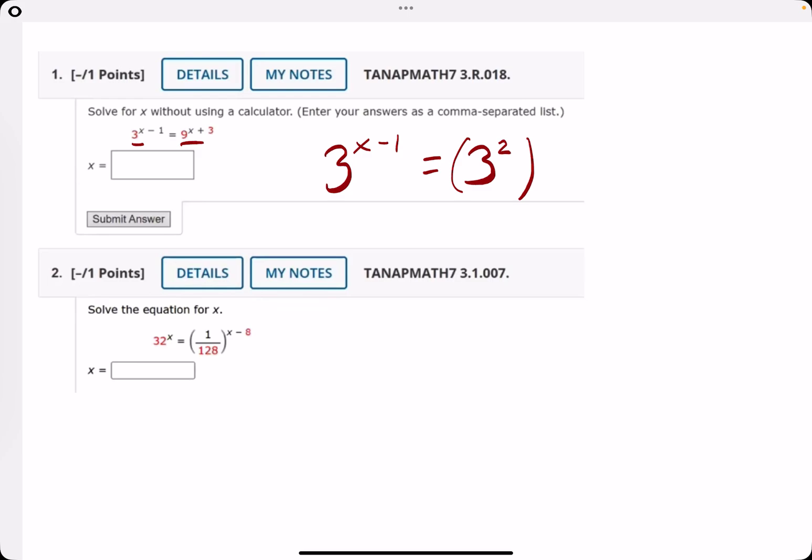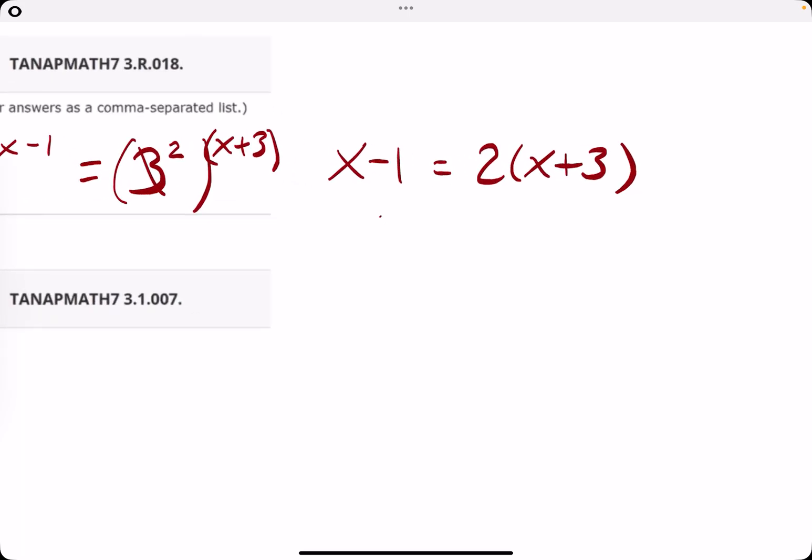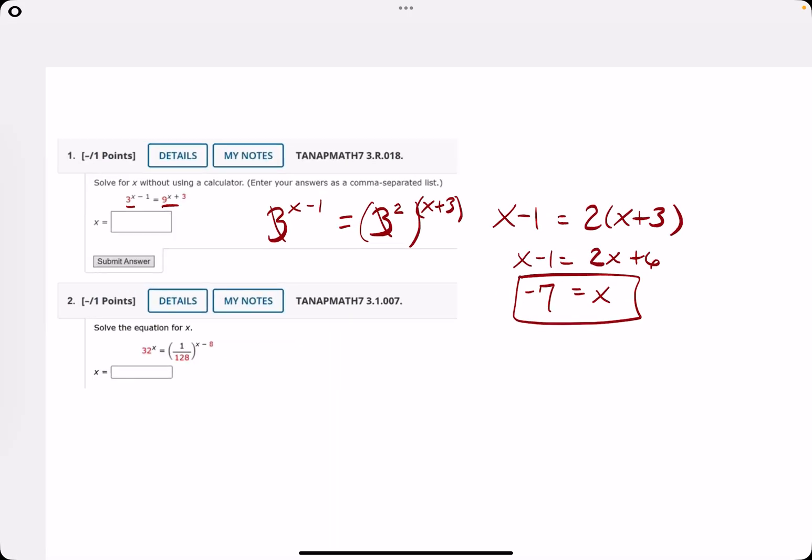And then we'll have 9 changes to 3 squared and we'll leave the x plus 3 right there. That way 3's match on both sides. So what that's going to leave us with is x minus 1 equals 2 times x plus 3. Then we just solve for x like a regular algebra problem. So we'll have 2x plus 6, subtract x, subtract 6, and we'll get x equals negative 7.